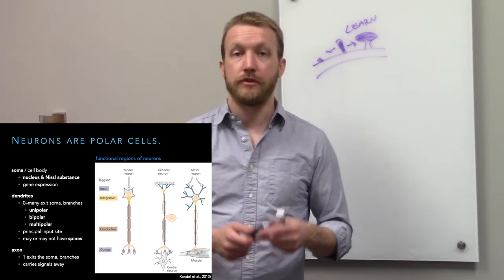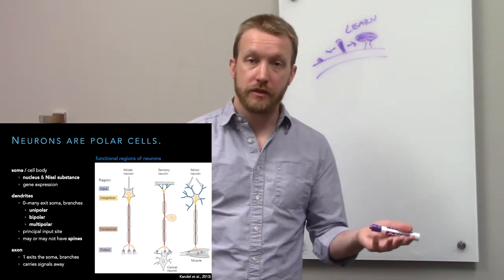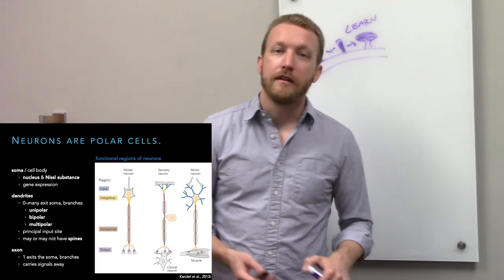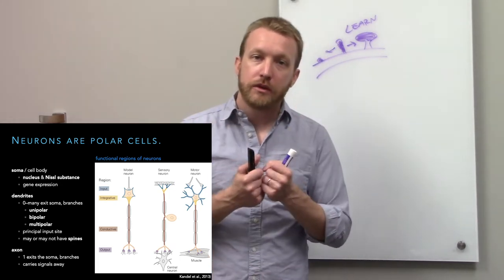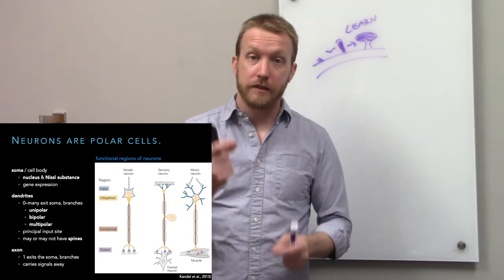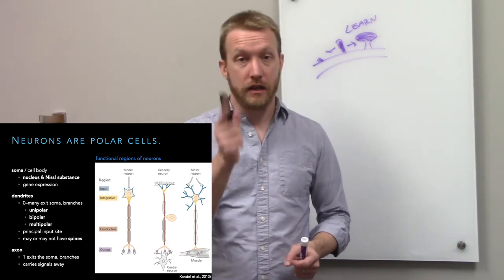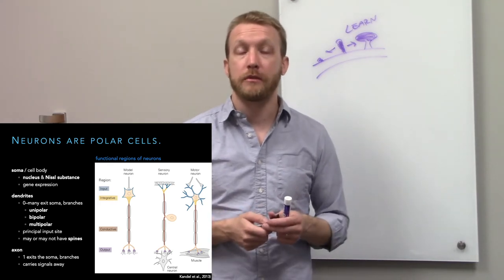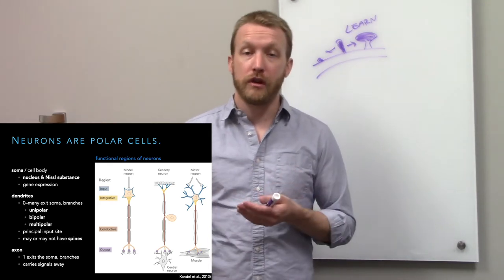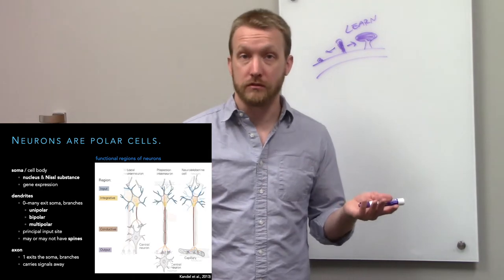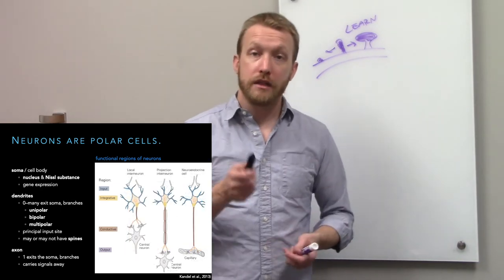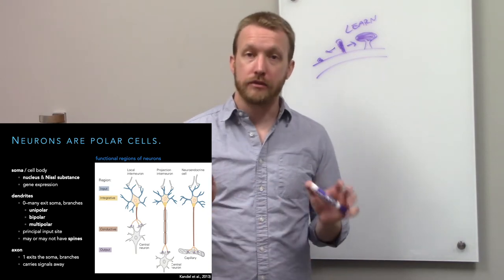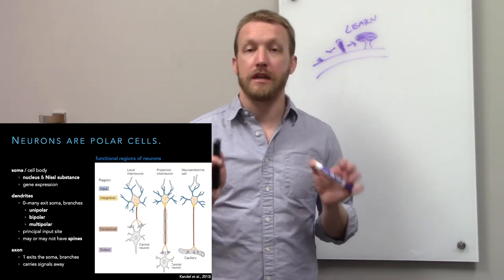Regardless of morphology, every neuron has: a site where it receives input (the dendrites), a place where it integrates that input (the cell body), a conductive portion (the axon), and then output at the presynaptic terminals. You might communicate with another neuron, a muscle, or even dump neurotransmitter into the blood. Every neuron has the same basic parts.